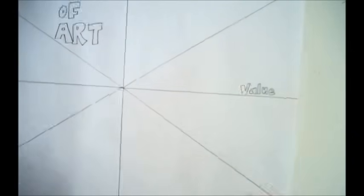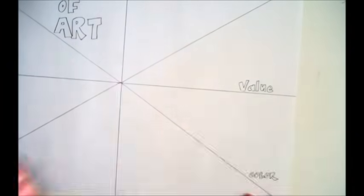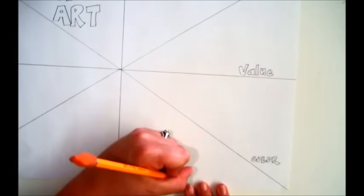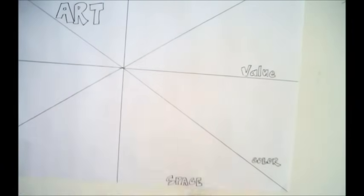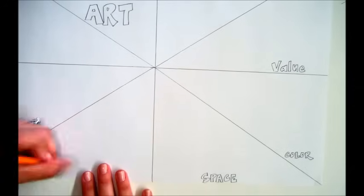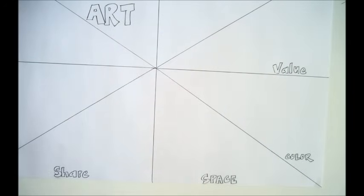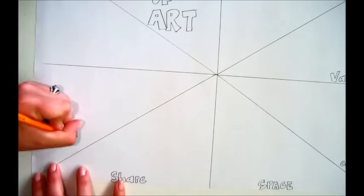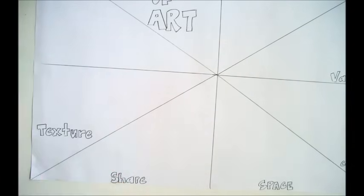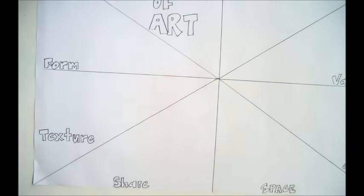Then down from that and clockwise: Value, Color, Space, Shape, Texture, and Form.